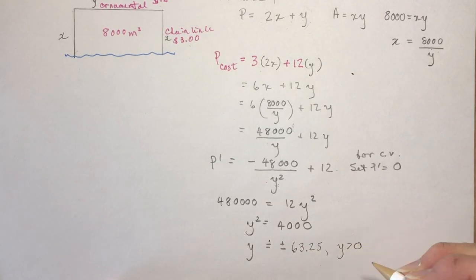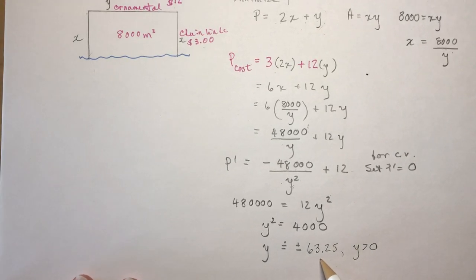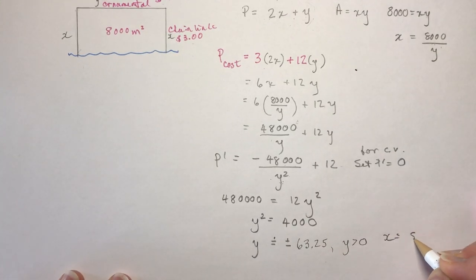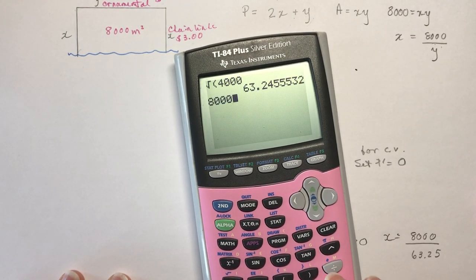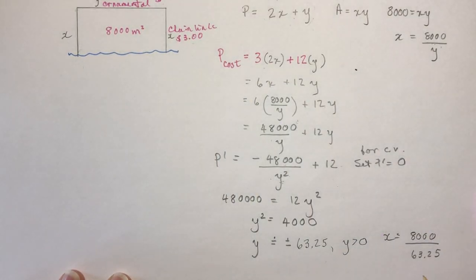I always say plus or minus and then I say y is greater than zero because I can't have a negative length. So that means my y is going to be 63.25, and then you can find—what are the dimensions of the fence? It's going to be 63.25 meters long. And so your perimeter, let's get what x is going to be. So x is going to be equal to 8,000 divided by 63.25. So let's do 8,000 divided by 63.25—approximately equal to 126.48.